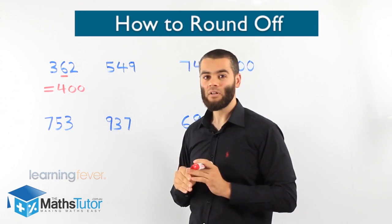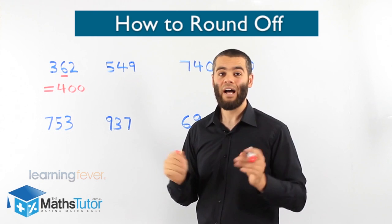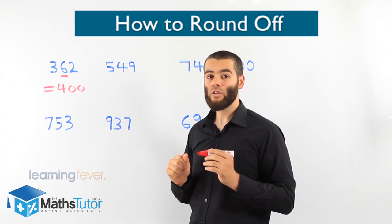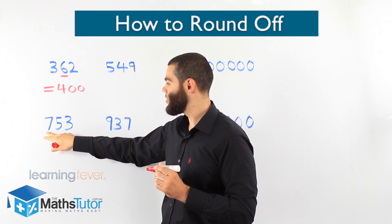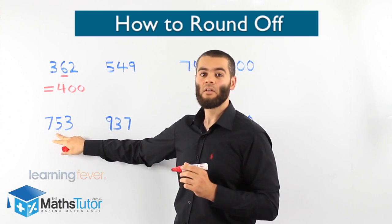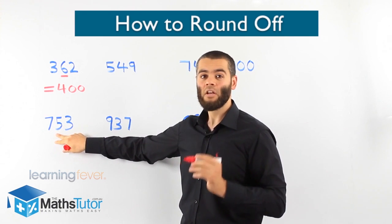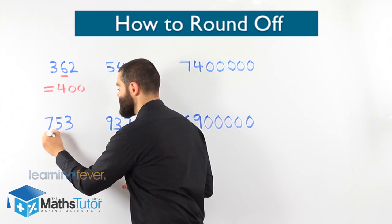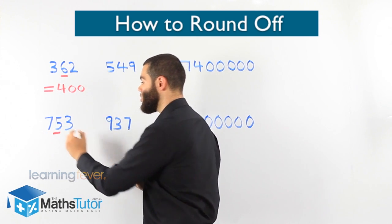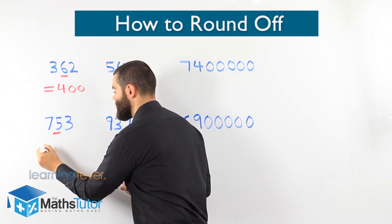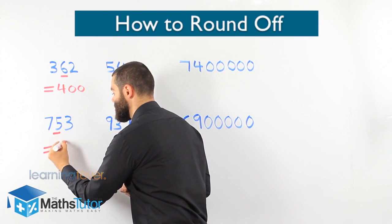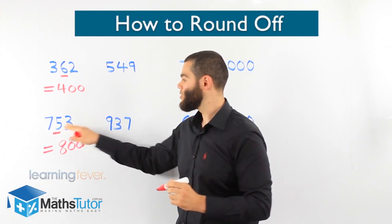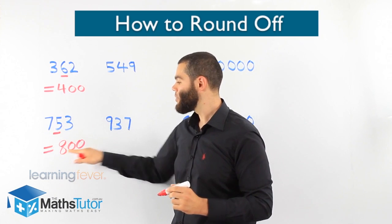Another example: seven hundred and fifty-three, rounded off to the nearest hundred. We look to the number on the right of the hundreds column — it's a five. The rule is five or more has enough muscles to push us up. So yes, it's five or more, and it pushes the hundred up. Therefore, seven hundred and fifty-three rounded up becomes eight hundred.